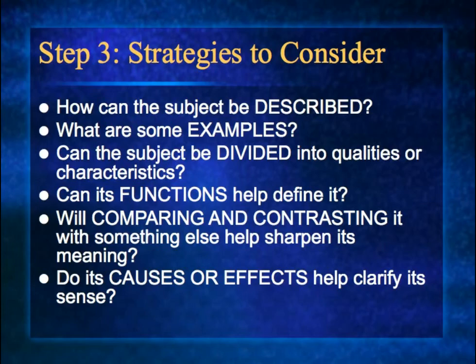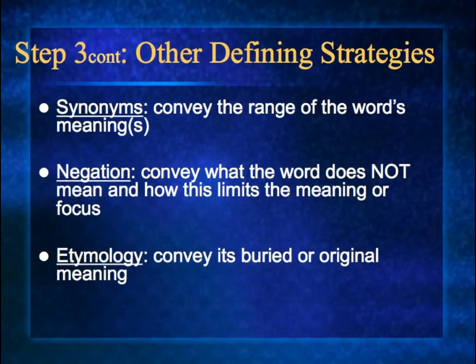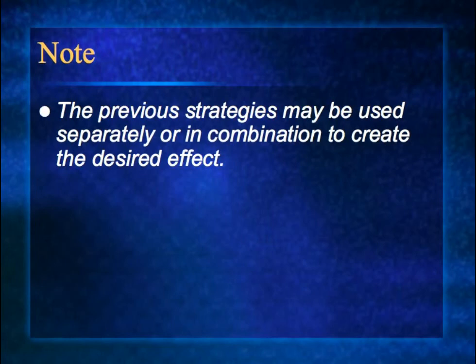Some strategies to consider: How can the subject be described? What are some examples? Can the subject be divided into qualities or characteristics? Can its functions help define it? Will comparing and contrasting it with something else help sharpen its meaning? Do its causes or effects help clarify its sense? Additionally, synonyms can convey the range of the word's meanings, negation can convey what the word does not mean, and etymology conveys its buried or original meanings. You can use these strategies separately or in combination.